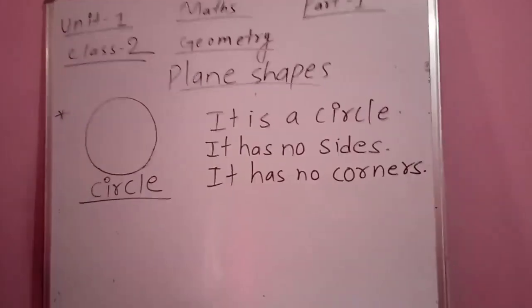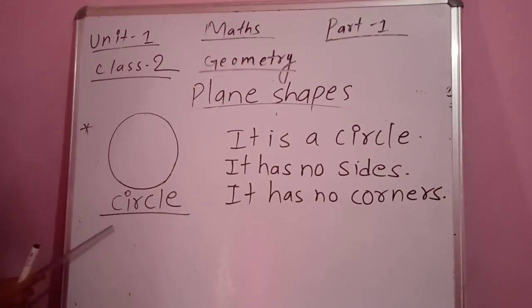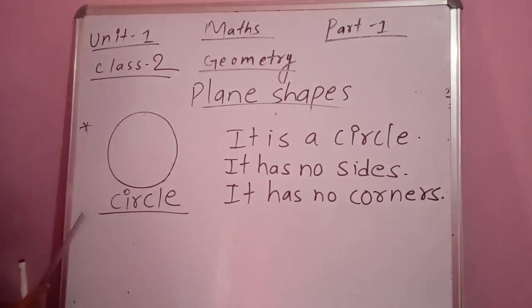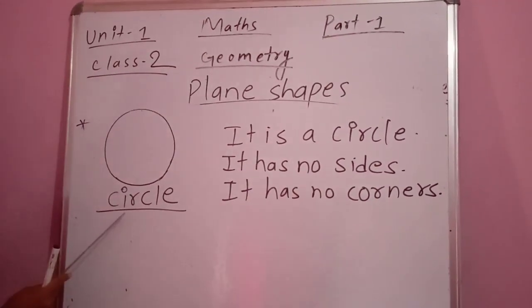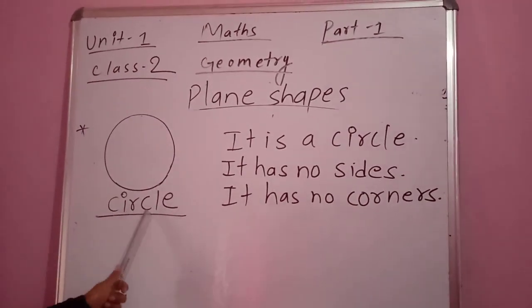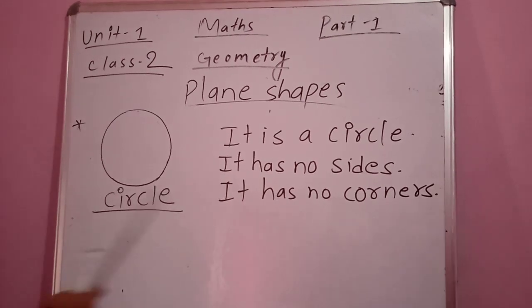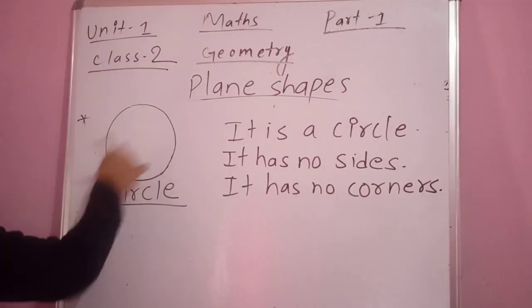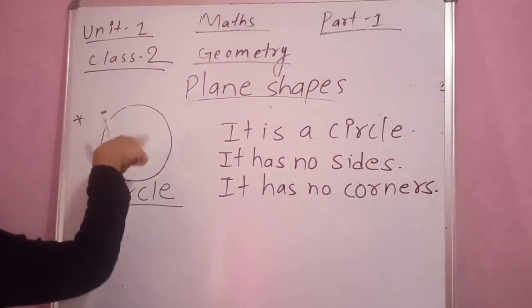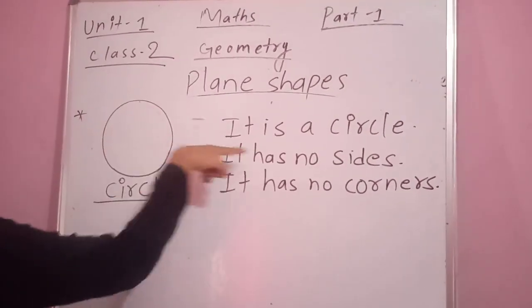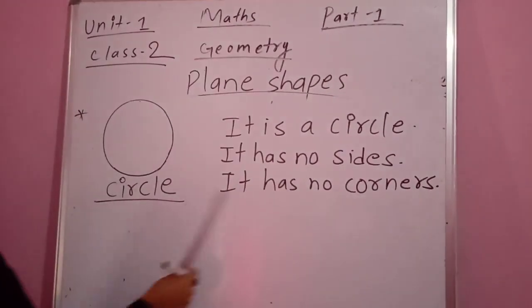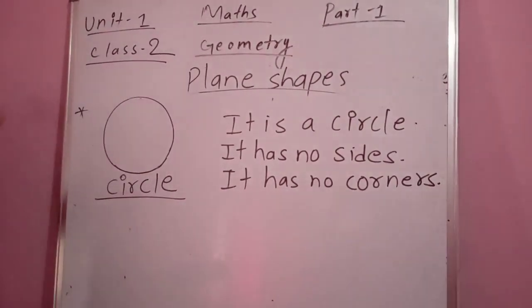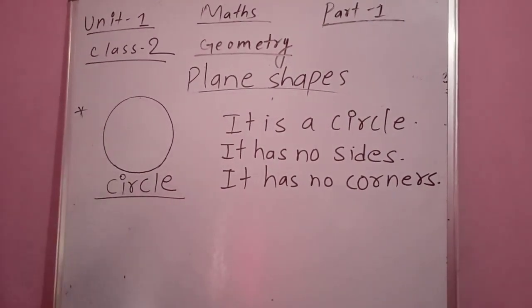Now this is your last plane shape, which is called the circle — C-I-R-C-L-E. It is a circle. It has no sides — you can't see any line segments. So it has no sides. And it has no corners. There is no any place where two lines meet at a point. That's why this circle has no corners.